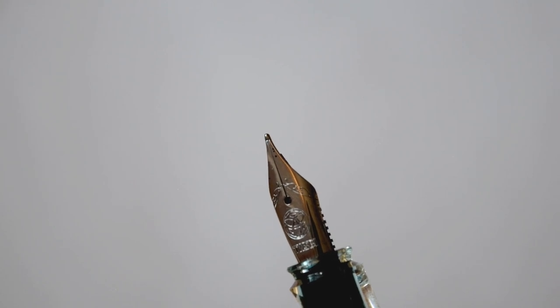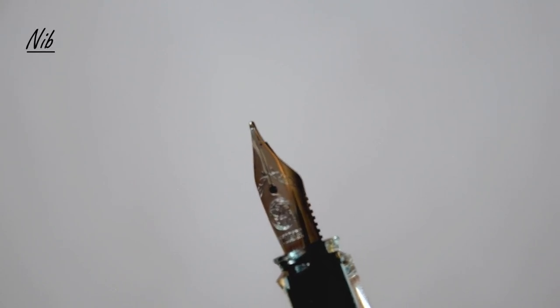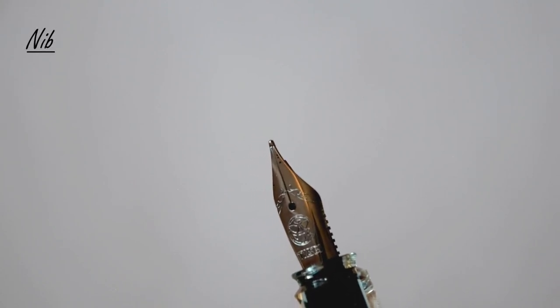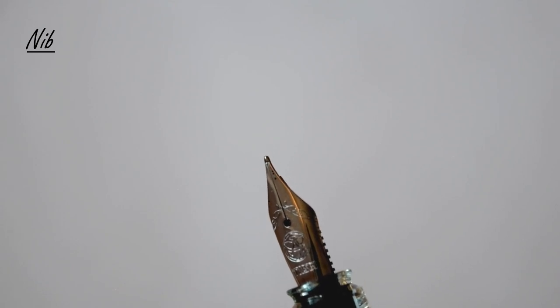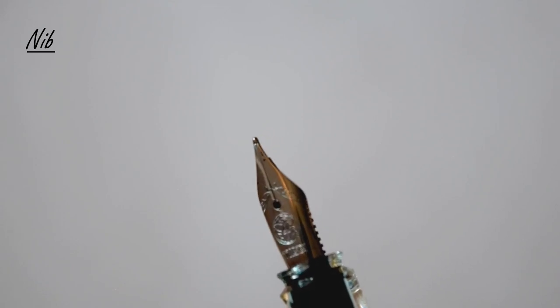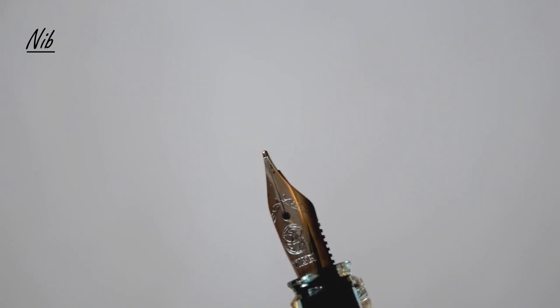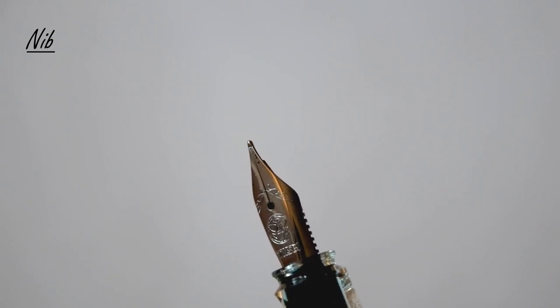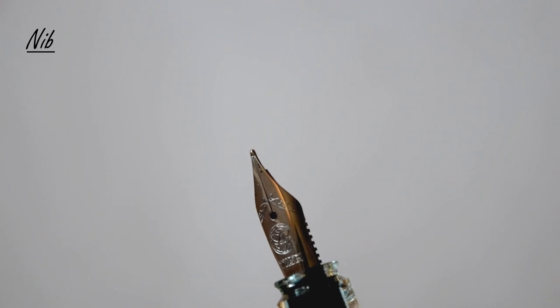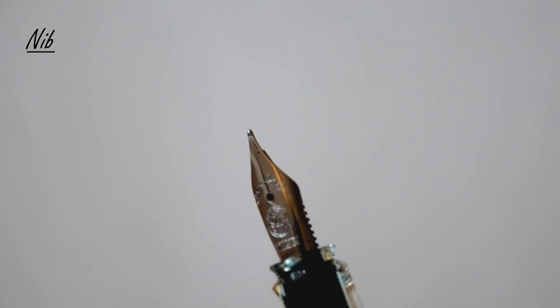The first part we'll be focusing on is the nib of the fountain pen, which is the part that brings ink to paper. Nibs are usually made of different materials. For example, this Twsbi Eco is made out of steel, but some can also be made out of gold or titanium and other kinds of materials.